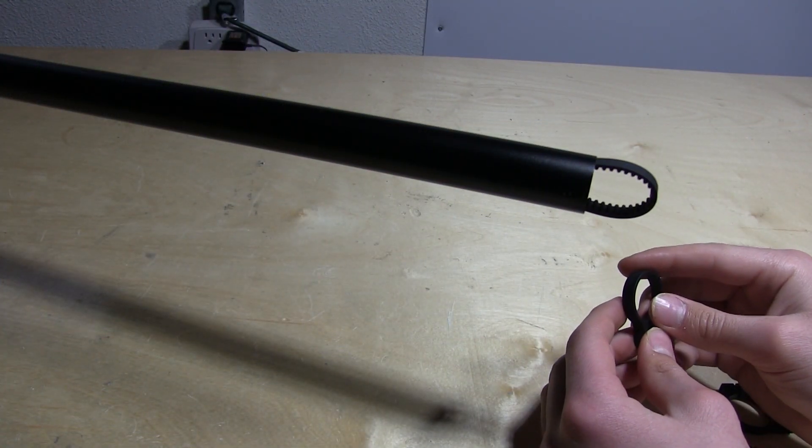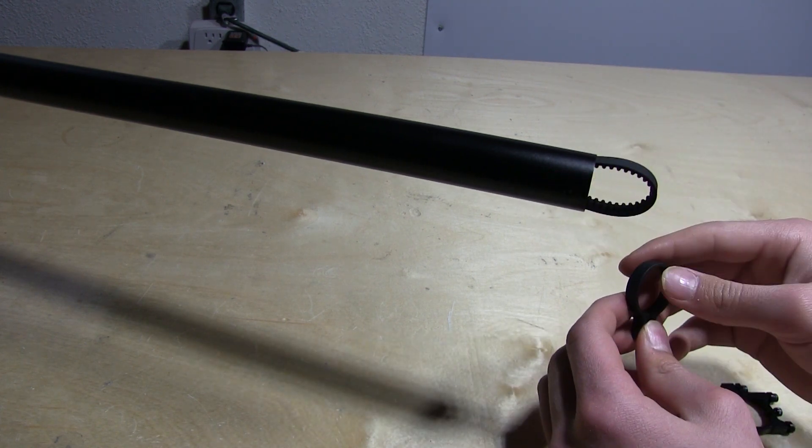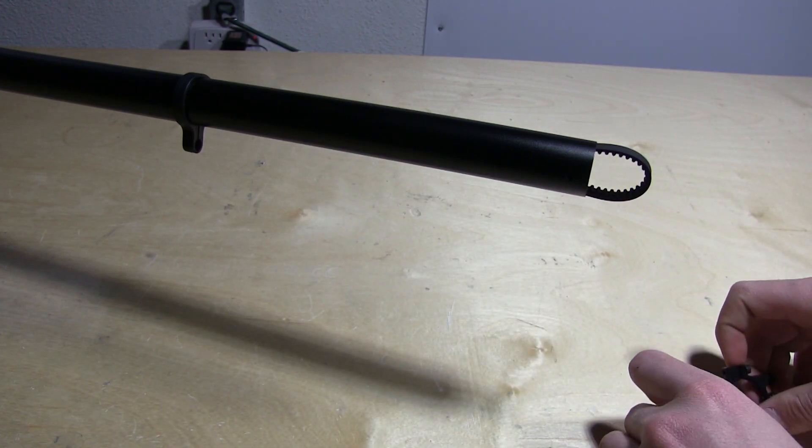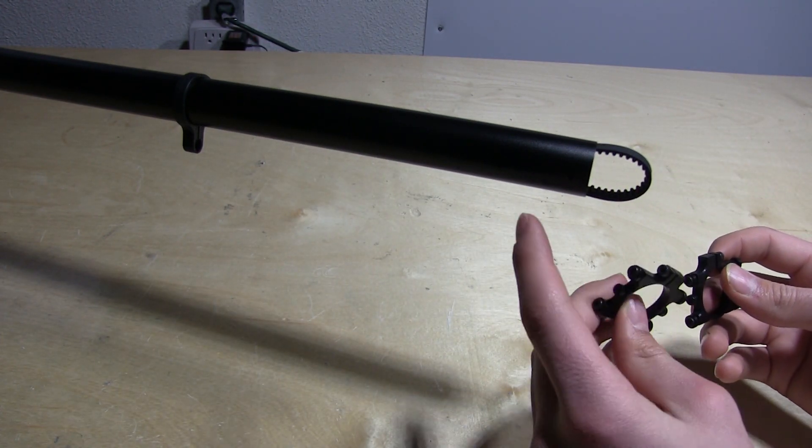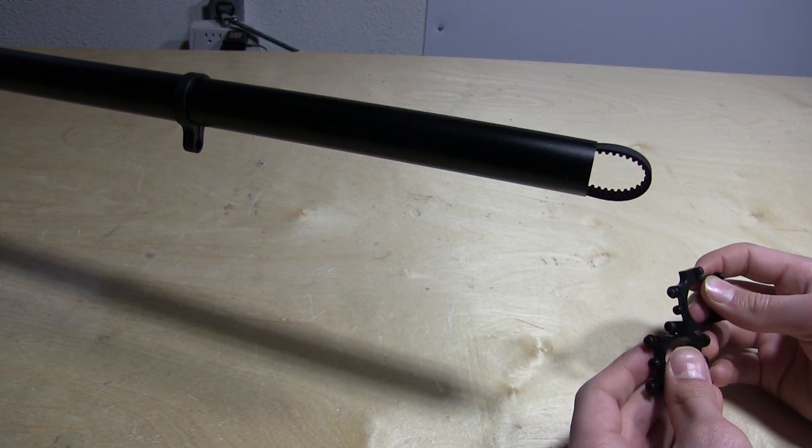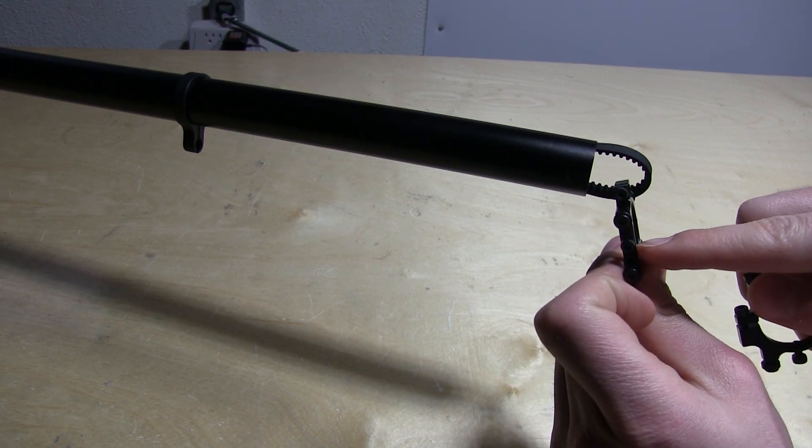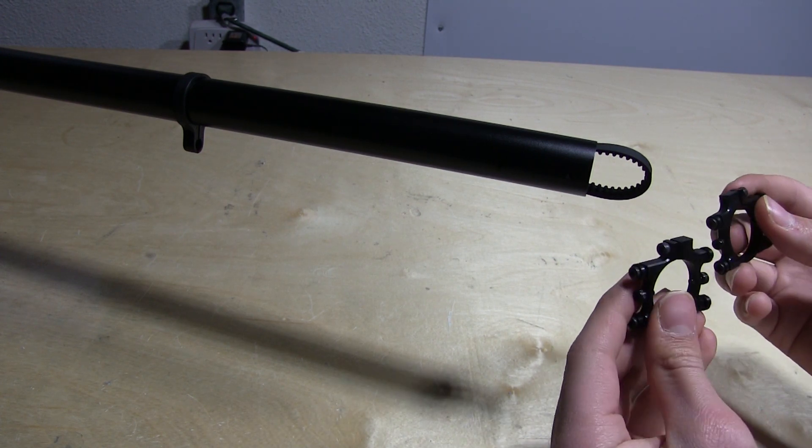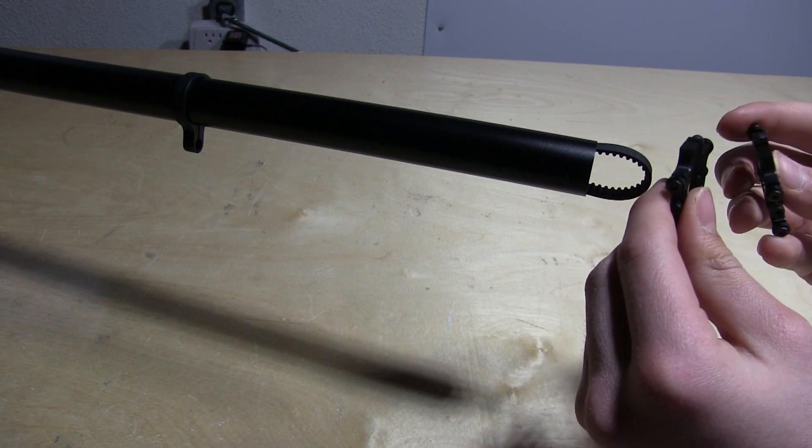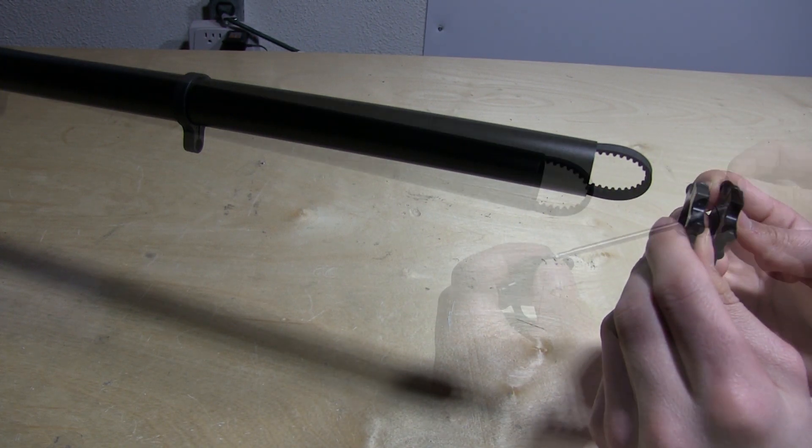Now we can start installing components to the back of the tail boom. First, we'll put on this guide. Next, we'll be looking at these two blocks. Take note on the tail boom that there are four holes in total. One right here, one right here, and then two on the back side. These are for the screws on each block as you can see. Make sure the bracket itself, the screw up here, is on top. That's how these will be mounted.